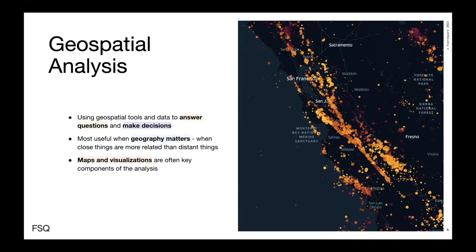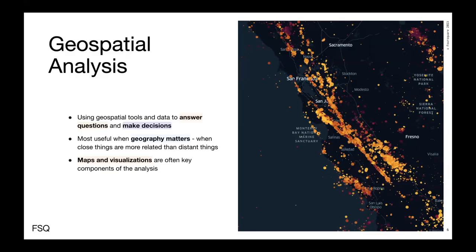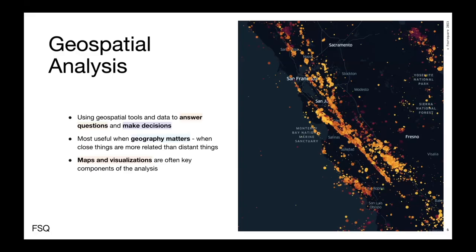We use geospatial analysis and geospatial tools to answer questions and to make decisions. I love storytelling maps, and I'm never going to say that telling a story with a map is a bad idea, but I also really love using maps to actually answer some key question or support some program decision that you can't otherwise easily access. This is most useful when geography matters — when close things are more related than distant things. This is a play on a famous quote from Waldo Tobler. You'll have times when the geospatial relationships between elements of your data really matter, and sometimes when they don't.